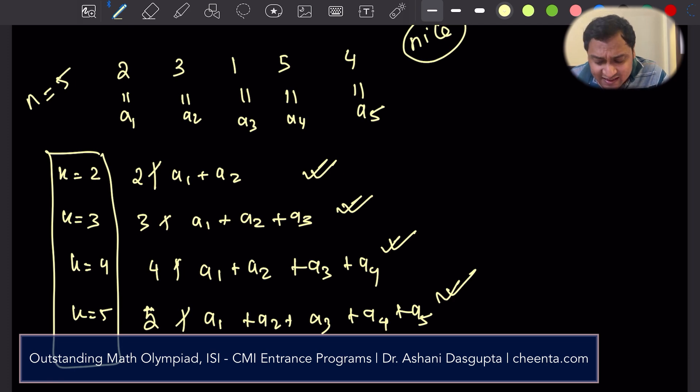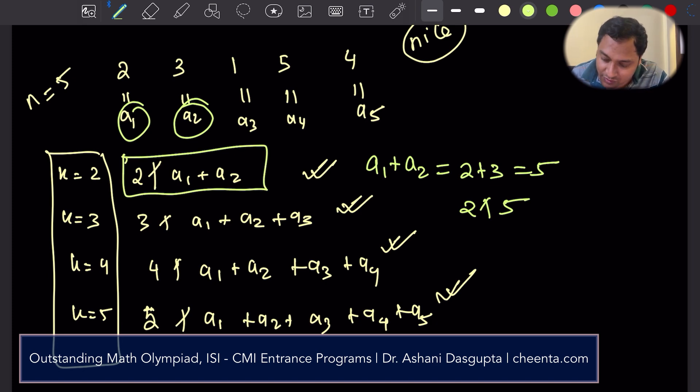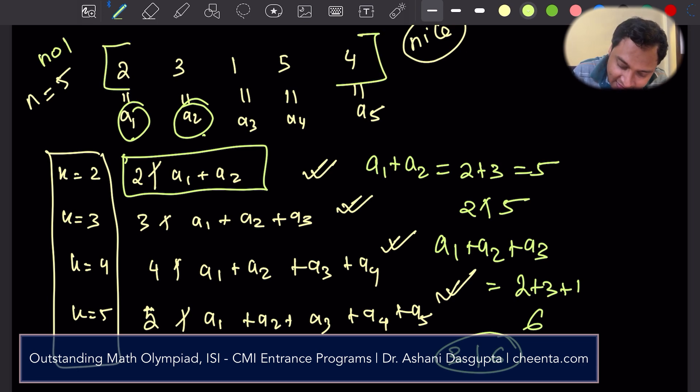Starting from k equal to 2 up to k equal to n, in this case n is 5. Each of these cases should be true. If all of these things happen, then we have a nice sequence. We have a nice rearrangement. So, is this nice? Let's check. So, what is a1 plus a2? a1 plus a2 is 2 plus 3, which is 5. Indeed, 2 does not divide 5. The first one works. Very good. Let's go to the second one. What is a1 plus a2 plus a3? a1 plus a2 plus a3 is 2 plus 3 plus 1, which is 6. Oh, that fails because 3 actually divides 6.